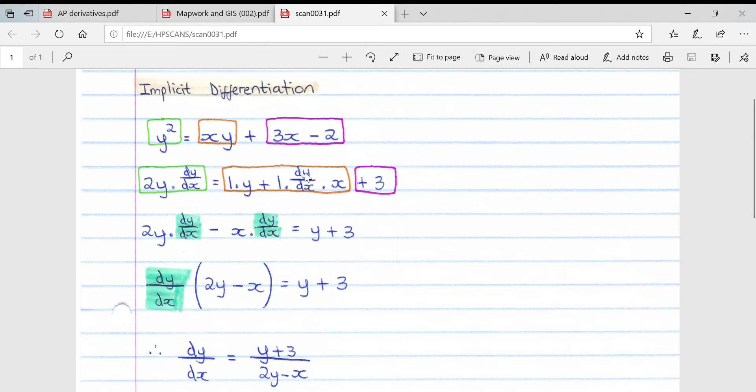That dy over dx because we're deriving a y term, multiplied by leave the first term which is x, plus the simple derivative of 3x which is 3. Minus 2 can't be derived so nothing gets added.